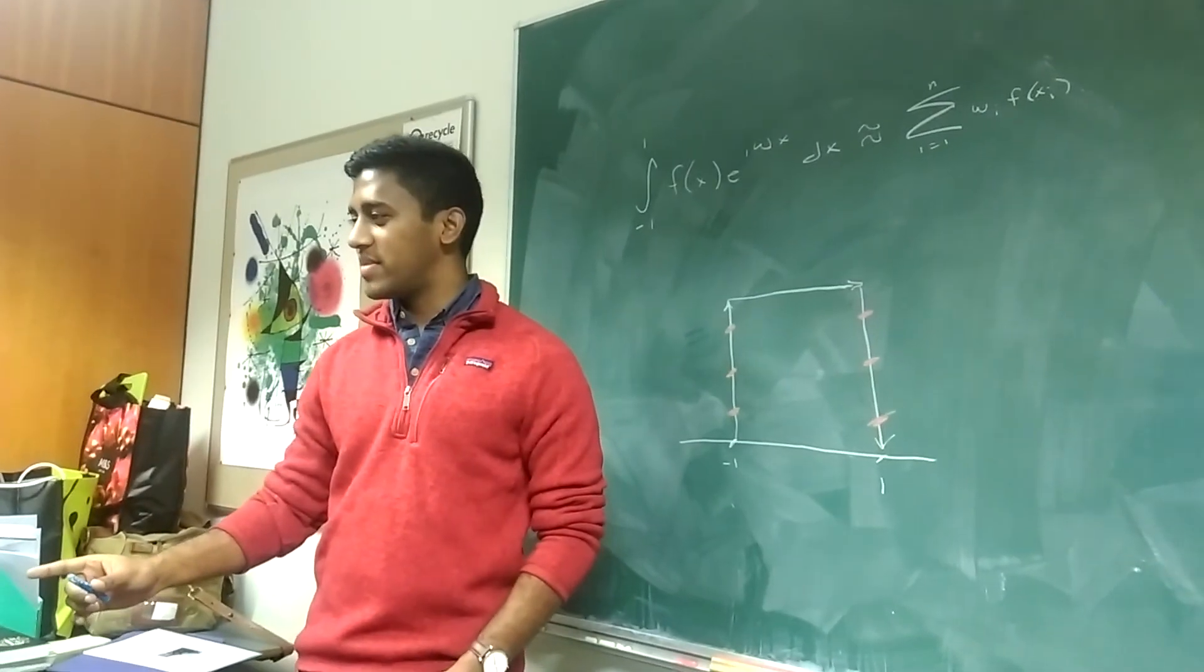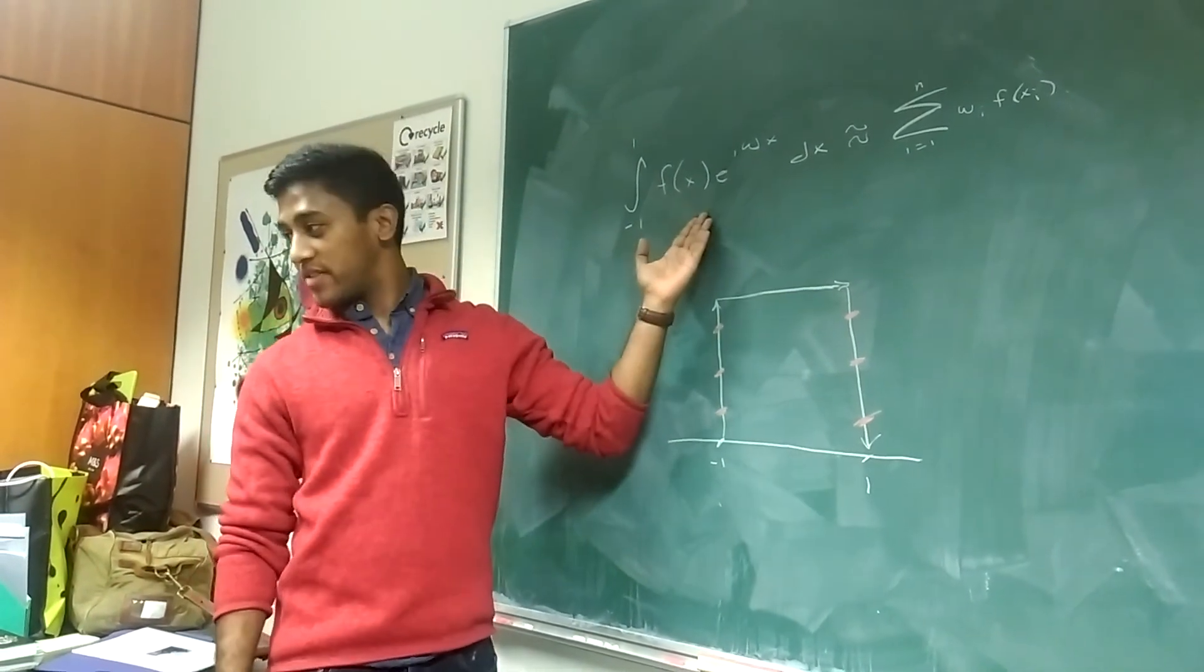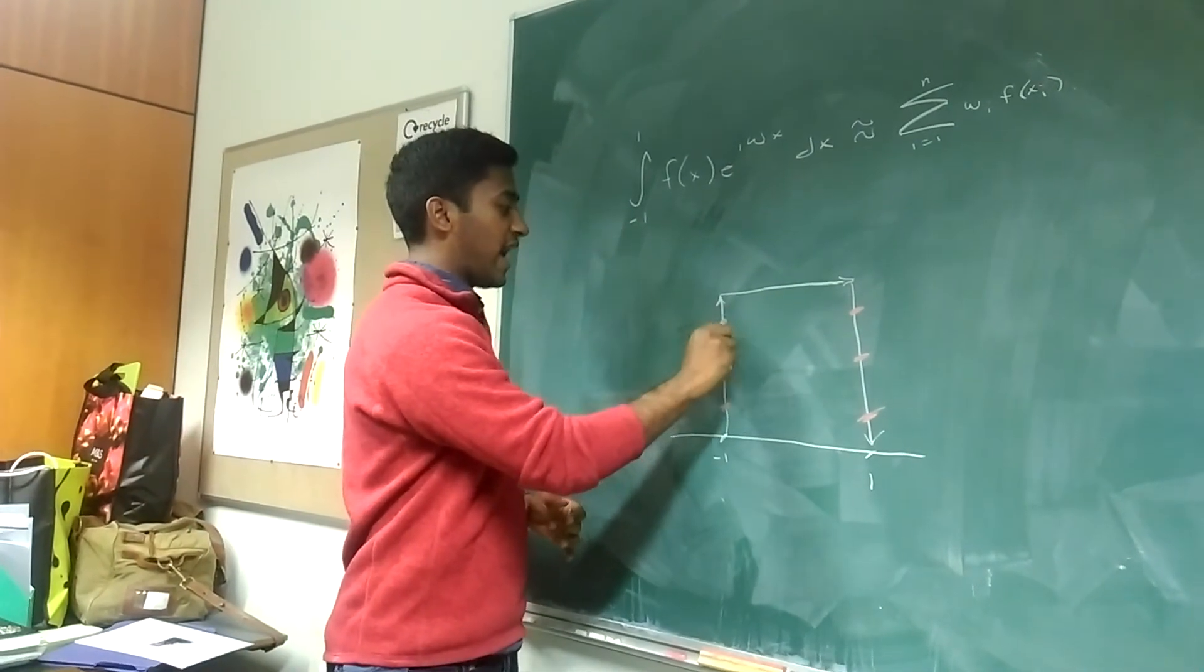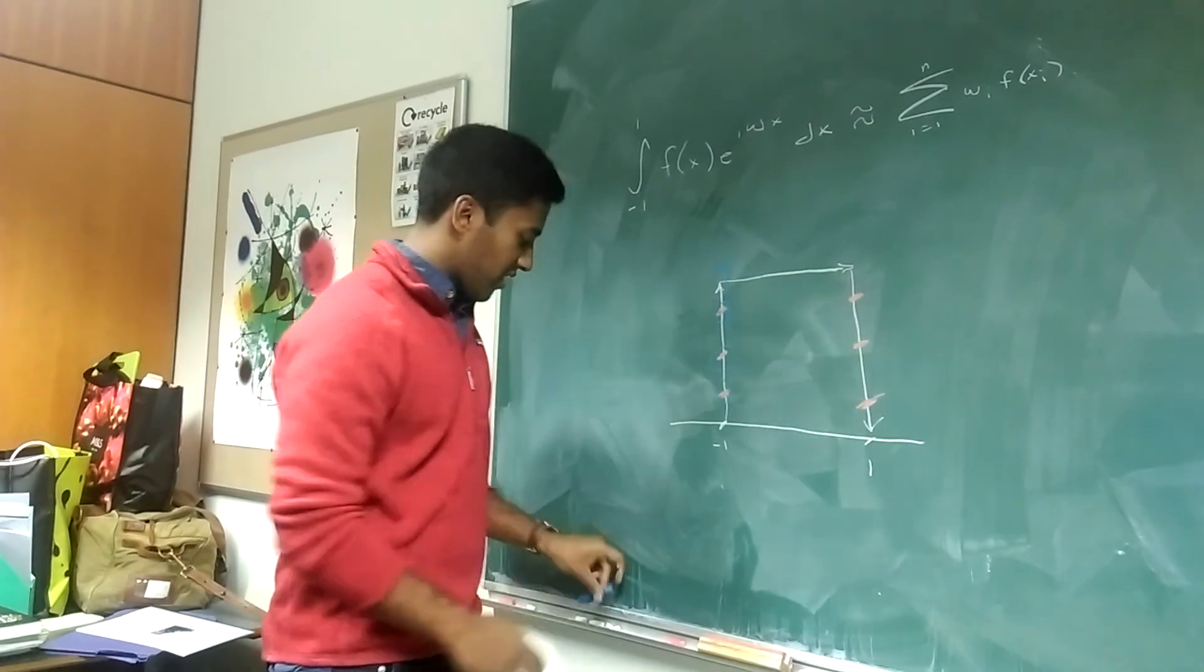But what if another asteroid comes along and it's not oscillating as wildly? Can we still use the method of numerical steepest descent? That's a very good question, Mr. NASA scientist. Unfortunately, as omega goes to zero, which corresponds to this integrand getting less and less oscillatory, these nodes actually shoot off towards infinity in the complex plane.